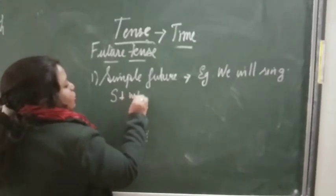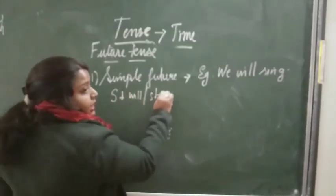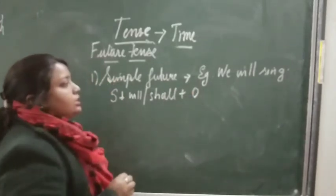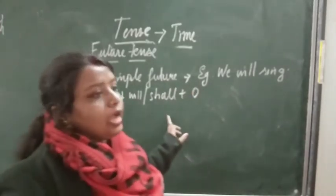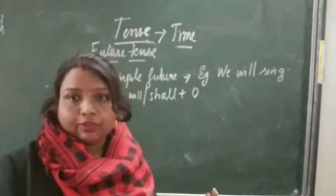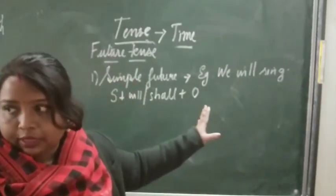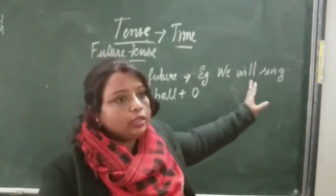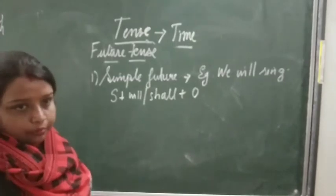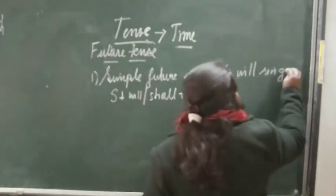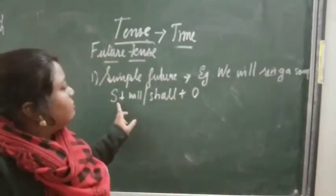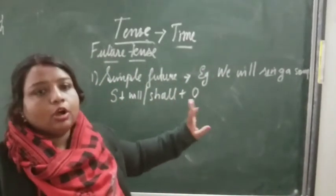Subject plus will or shall — anything you can use — plus object. Subject plus will or shall plus object. For example: we will sing. Or we will sing a song, you can also keep that. So the structure is subject plus will or shall plus object.